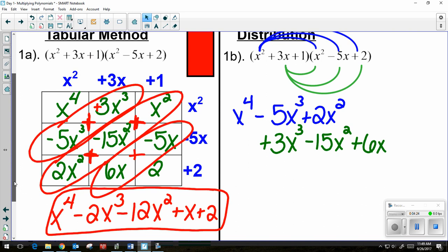And then lastly, I am going to distribute that 1 to each piece. And if I'm stacking them on top of each other, I have a 1 times an x squared. So I'm going to line it up here. 1x squared, a minus 5x, and then a positive 2.